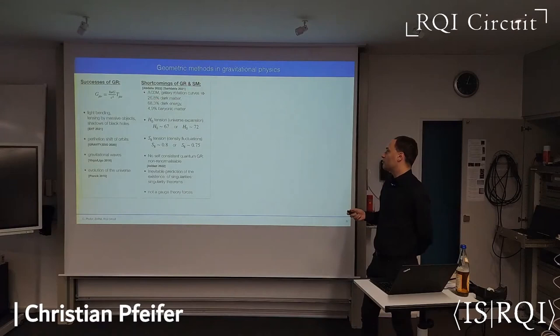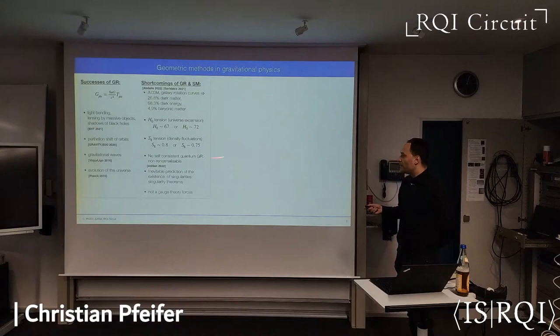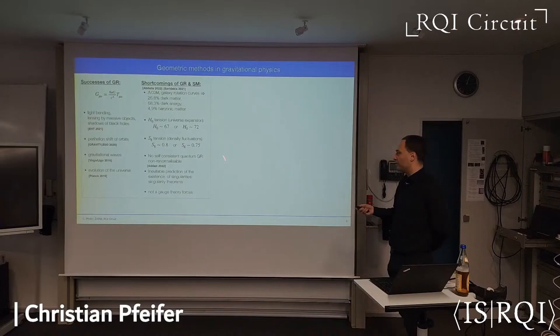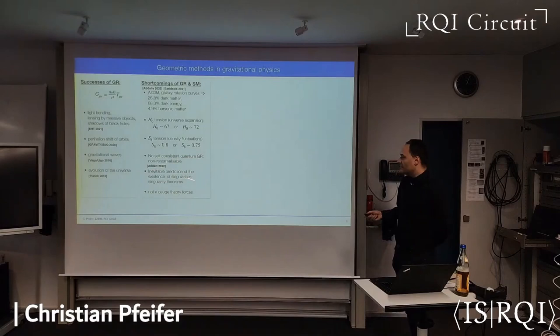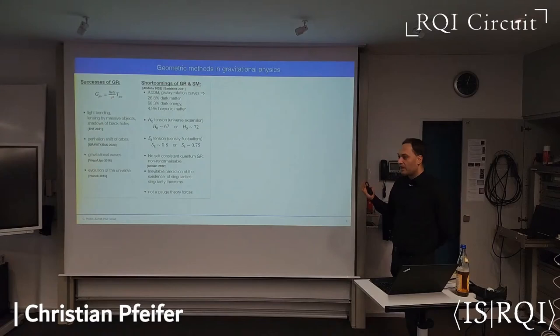But there are also some shortcomings. When we combine general relativity and the standard model of particle physics, including the cosmological constant and cold dark matter, the conclusion is that the universe contains a lot of dark matter and dark energy. We have some mismatch of observation and predictions in cosmology. On the theoretical side, there is so far no self-consistent theory of quantum gravity on the basis of general relativity. There is the inevitable prediction of singularities, and gravity is not described as a gauge theory compared to all other forces in the standard model.